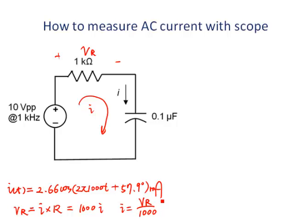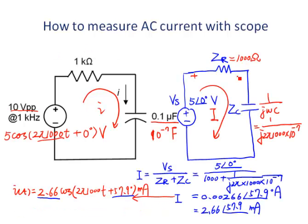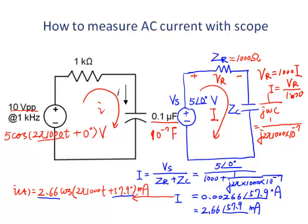Let's look at the phasor domain. Ohm's law works in the same way: Vr is the voltage across the resistance, which equals 1,000 times I. So the current should be Vr divided by 1,000. To measure the magnitude of the current, we measure the voltage across the resistor and divide by 1,000. The phase angle of the current should be the same as the phase angle of the voltage.